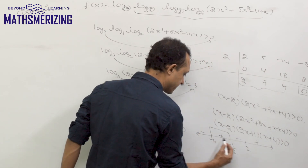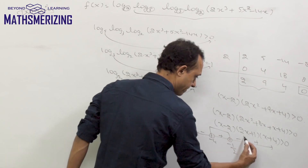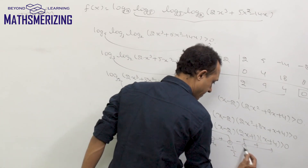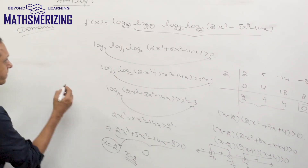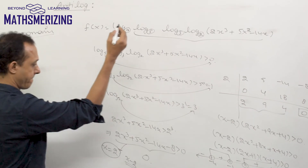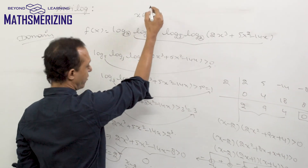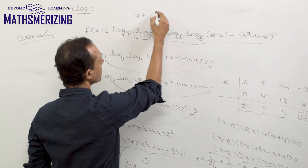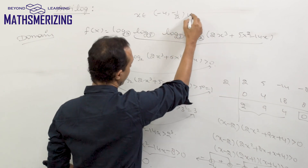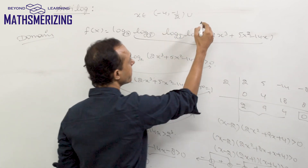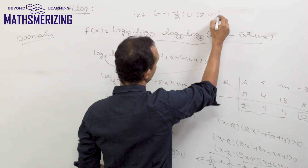The domain of this function is x ∈ (−4, −1/2) ∪ (2, ∞).